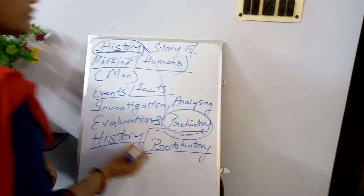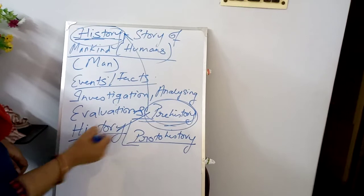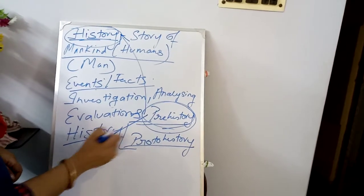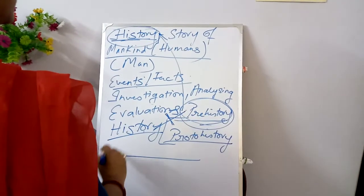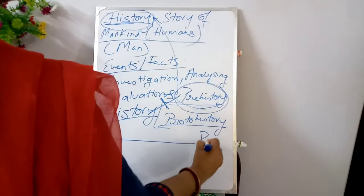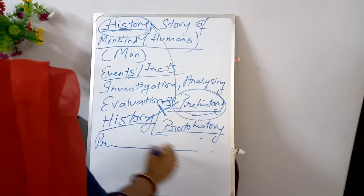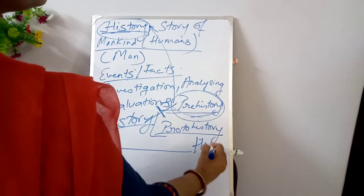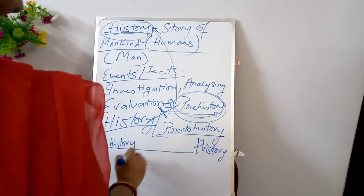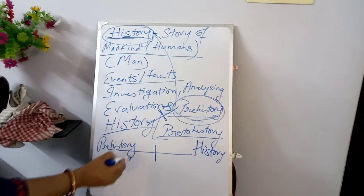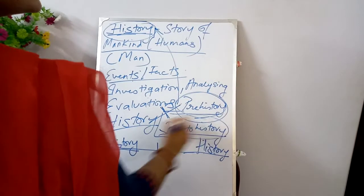What is proto-history? The position or the period between history and prehistory is called proto-history. If we imagine a line with prehistory on one end and history on the other, the intermediary gap between prehistory and history is called proto-history.